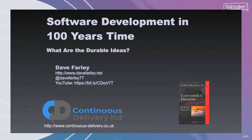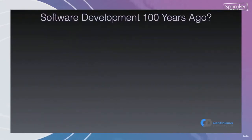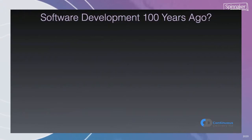I want to talk about what software is going to look like in the future, because I think we've learned some lessons about what works. One way of getting into this is to think about what's durable — what sort of ideas stick — and what's going to be true in 100 years' time by asking: what was true of software development 100 years ago?